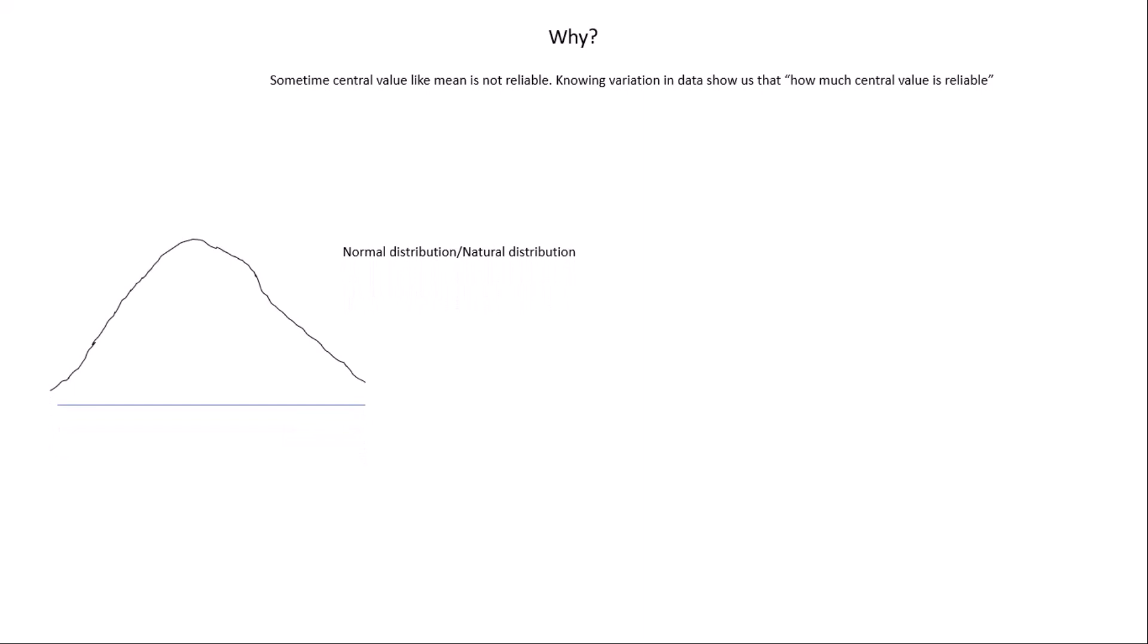What is normal distribution? It is also called natural distribution. It means that all the objects in this universe follow the rules which are made by physics. That's why we find the data is normally distributed.